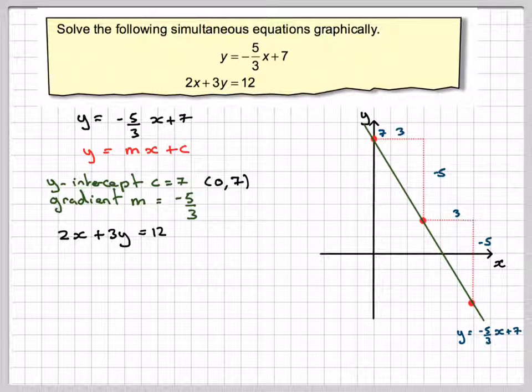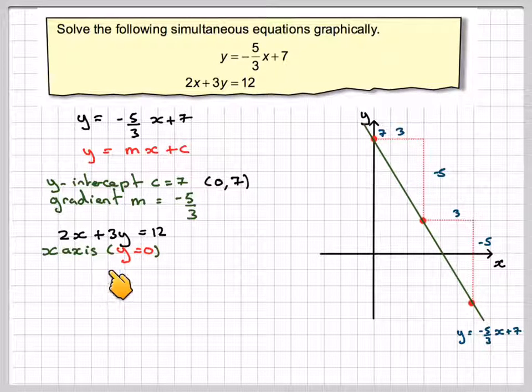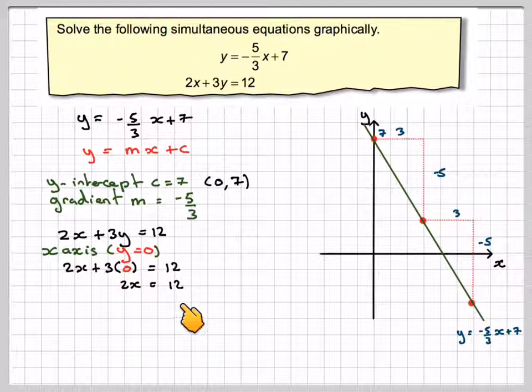The graph of 2x plus 3y is equal to 12 is best drawn by looking at the axes. So, for the x-axis, y will be equal to 0. So, we've got 2x plus 3 times 0 is equal to 12, and therefore 2x will be equal to 12, and therefore x will be equal to 6. So, it goes through the point 6, 0.